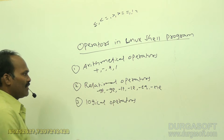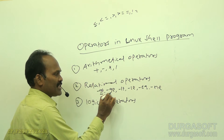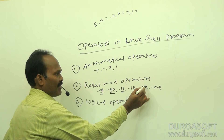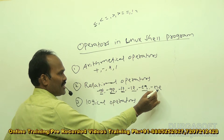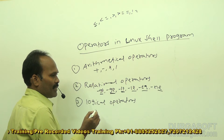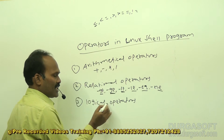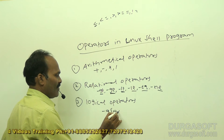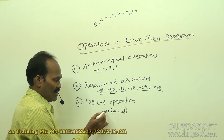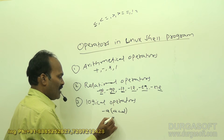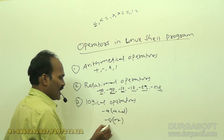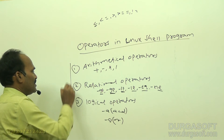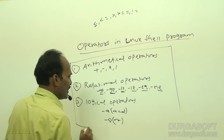In Linux shell: -gt means greater than, -ge means greater than or equal to, -lt means less than, -le means less than or equal to, -eq means equal to, and -ne means not equal to. For logical operators, in C/C++ and Java the representation differs. In Linux shell we use -a for AND, -o for OR, and the exclamation symbol for NOT. These are the three logical operators.